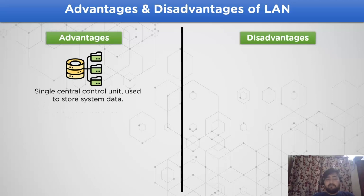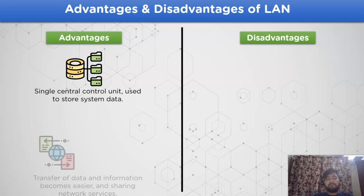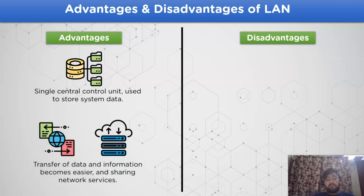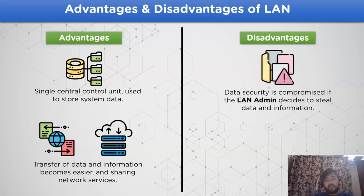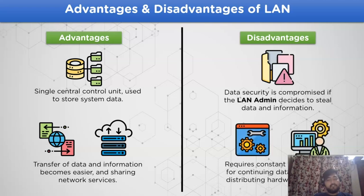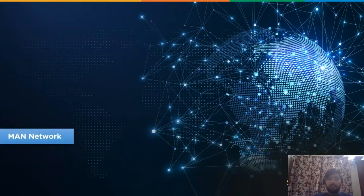For LAN advantages: it has a single control unit used to store data and information, accessible anytime. Transferring data and information becomes much easier and faster. As for disadvantages: data security is compromised if the LAN admin decides to steal data. It also requires constant administration for continuing data services and distributing hardware resources.